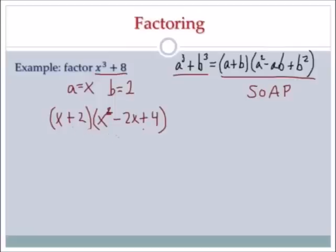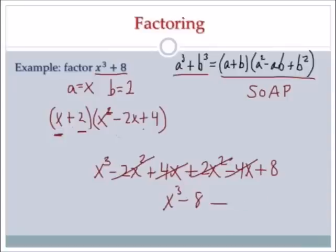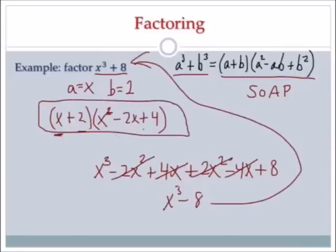Now I'm going to distribute the x and the 2 to verify. x times x squared is x cubed. x times negative 2x is negative 2x squared. x times 4 is 4x. Then I distribute the 2: 2 times x squared is 2x squared, 2 times negative 2x is negative 4x, and 2 times 4 is 8. Combining like terms: negative 2x squared plus 2x squared is 0, and 4x minus 4x is 0. I'm left with x cubed plus 8, which is what I started with. So this is my final answer.